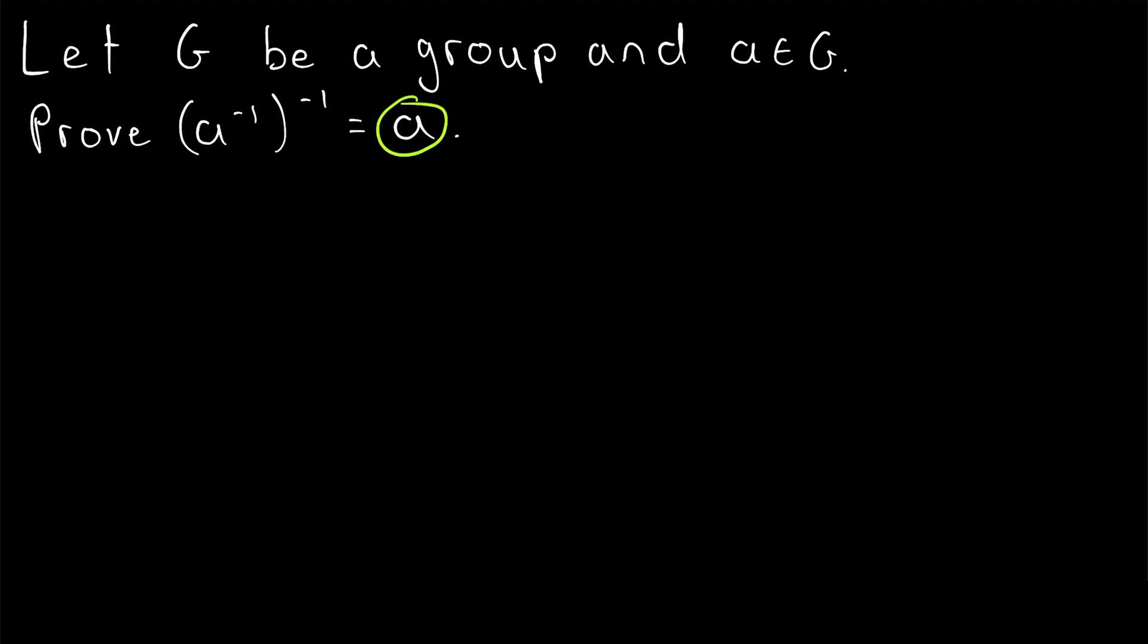To prove that A is the inverse of its own inverse, we just need to show that it follows the definition of an inverse element. In other words, we just need to show that if we combine A with A inverse in any order, we always get the identity.